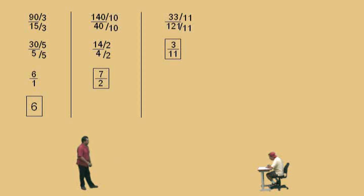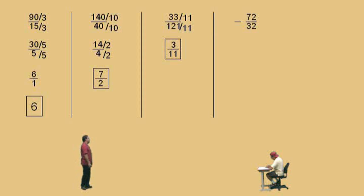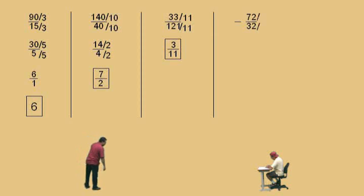Professor Perez: You can do it, and that was it. Here's another one, Charlie — a negative number, don't get scared. 72 divided by 32, Charlie, what number divides evenly into both of those?